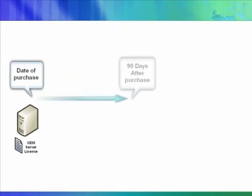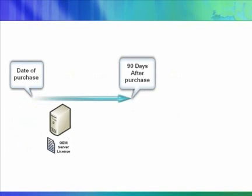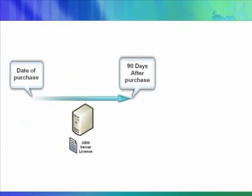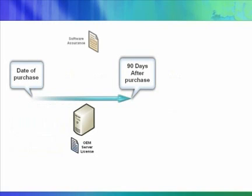Let's say you purchase a new server and it comes with an OEM server license on it. Within the first 90 days after the purchase of your OEM server license, you do have the option to add software assurance to that OEM server license. For this example, we will assume you choose not to add software assurance to the OEM server license.